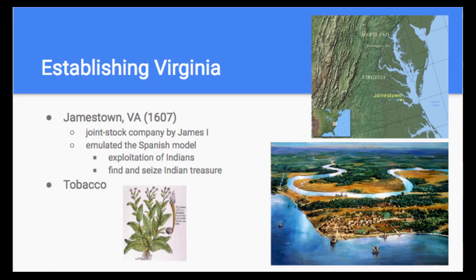Most early colonists soon died from disease and starvation. A joint stock company is a company in which investors invest funds to lessen the risk of a voyage — instead of one person spending all the money, it might be a hundred men splitting the cost, so if the company fails they only lose a small percentage. The salvation of the colony was tobacco brought in from the Caribbean. After the introduction of tobacco, Virginia prospered, although life remained rough and life spans short until the late 1600s. Virginia was, as John Rolfe would say, a colony founded upon smoke.